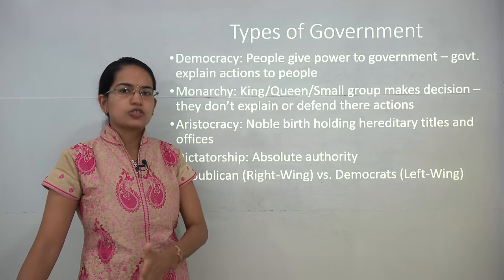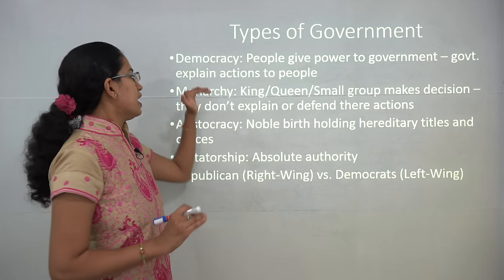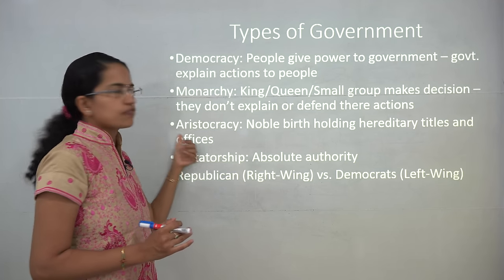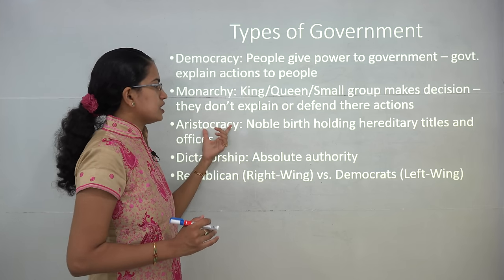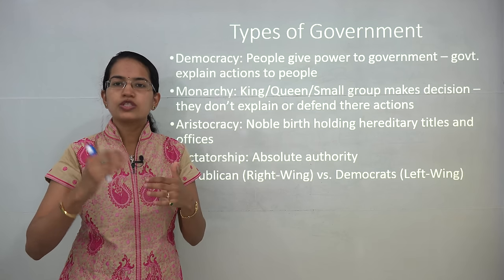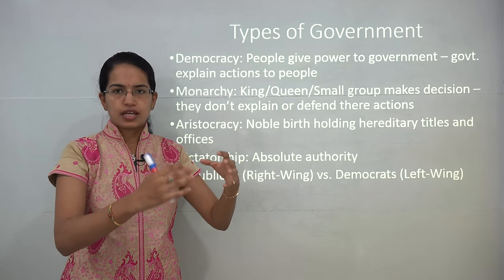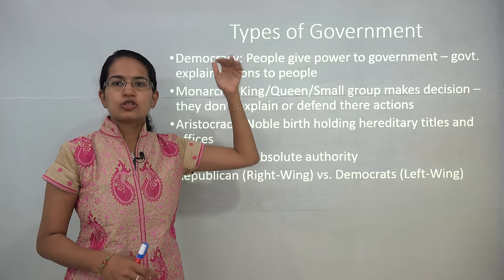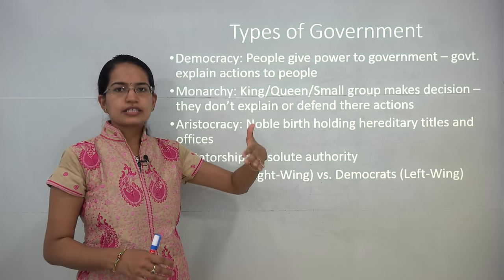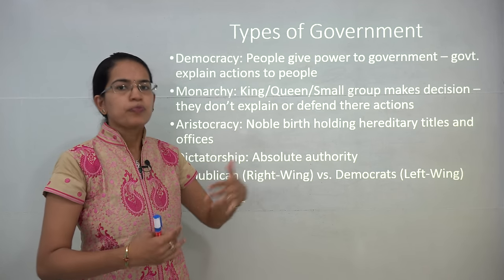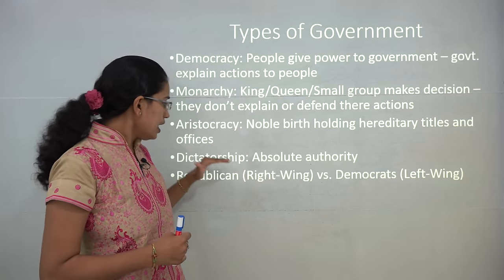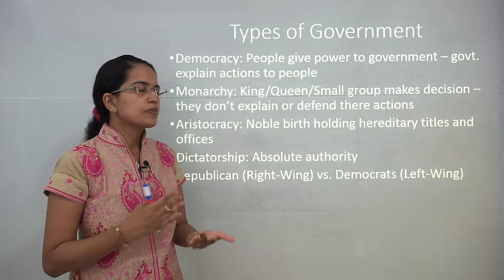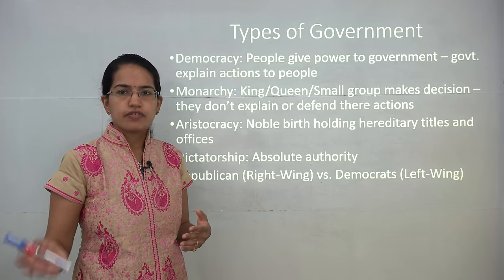Under aristocracy, it is a bit of a deviation or an extract of monarchism itself. Under aristocracy, noble birth holds heredity — the son of the king would become the king. That is a kind of aristocratic system where you have hereditary titles. For example, Queen Elizabeth's next successor would again be titled Queen Elizabeth II — that is a kind of aristocratic setup. Under dictatorship, there is absolute authority. Hitler and Mussolini are good examples of dictatorship, and we will study more about them when we cover history topics. Whatever has been ordered must be followed.